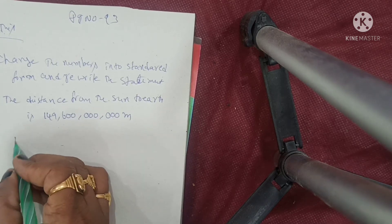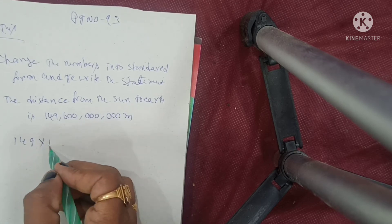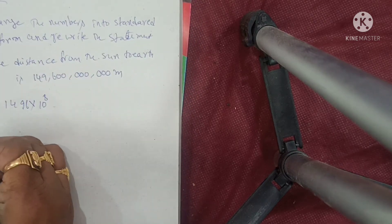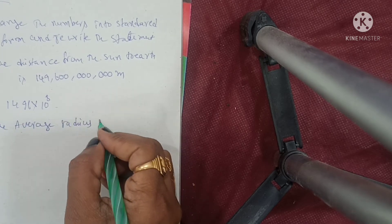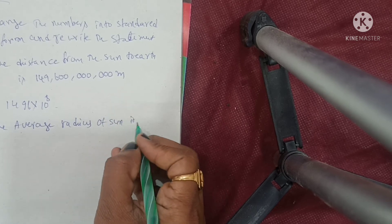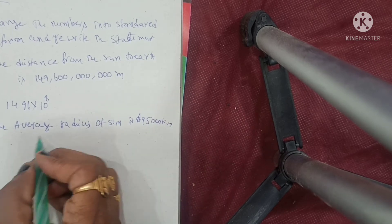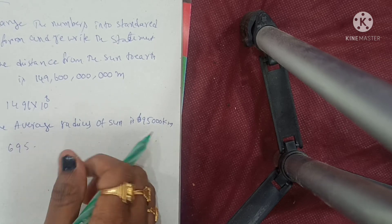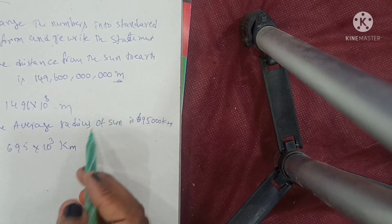How to write this one? 149 — counting digits: 1, 2, 3, 4, 5, 6, 7, 8 — so 149 into 10 to the power of 8. Next, second one: the average radius of the sun is 695,000 kilometers. How to write: 695 — counting zeros: 1, 2, 3 — so 6.95 into 10 to the power of 3 kilometers.